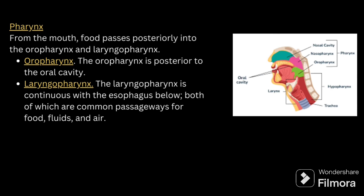From the mouth, food passes posteriorly into the oropharynx as well as the laryngopharynx. The oropharynx is posterior to the oral cavity and the laryngopharynx is continuous with the esophagus below, both of which are common passageways for food, fluid, and air. We already explained this in the respiratory system regarding oropharynx, nasopharynx and so on. In the digestive process you have to talk about the oropharynx and laryngopharynx only.